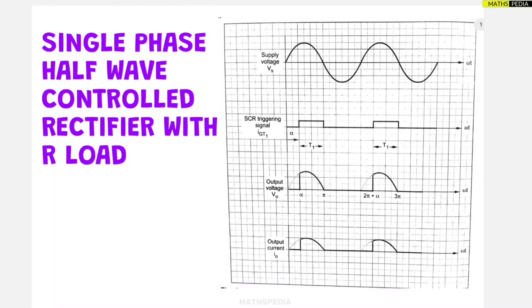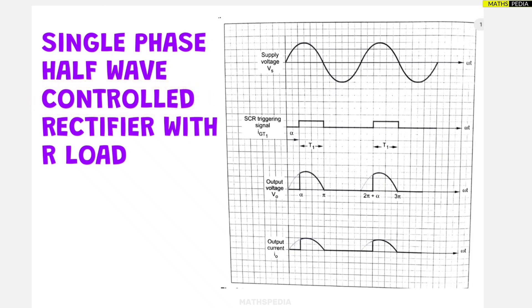In this video we are going to take one interesting topic which is a single phase half wave controlled rectifier with R load. That derivation we are going to do based on the waveform given here. This is just the derivation part. Remember that in a controlled rectifier we will be using thyristors, whereas in an uncontrolled rectifier we use diodes.